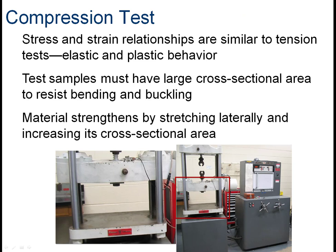Compression tests are done very similarly to tension tests, except instead of pulling the material apart we push it together. Generally the sample has to be fairly bulky — a tiny narrow rod would just buckle, similar to how narrow trusses yield in compression. So we use a fat sample to resist bending and buckling. As we compress the material down, it flows and stretches out laterally, increasing its cross-sectional area. It's similar to a tensile test but the stretch is lateral. The ultimate strength in tension is not necessarily the same as the ultimate strength in compression.